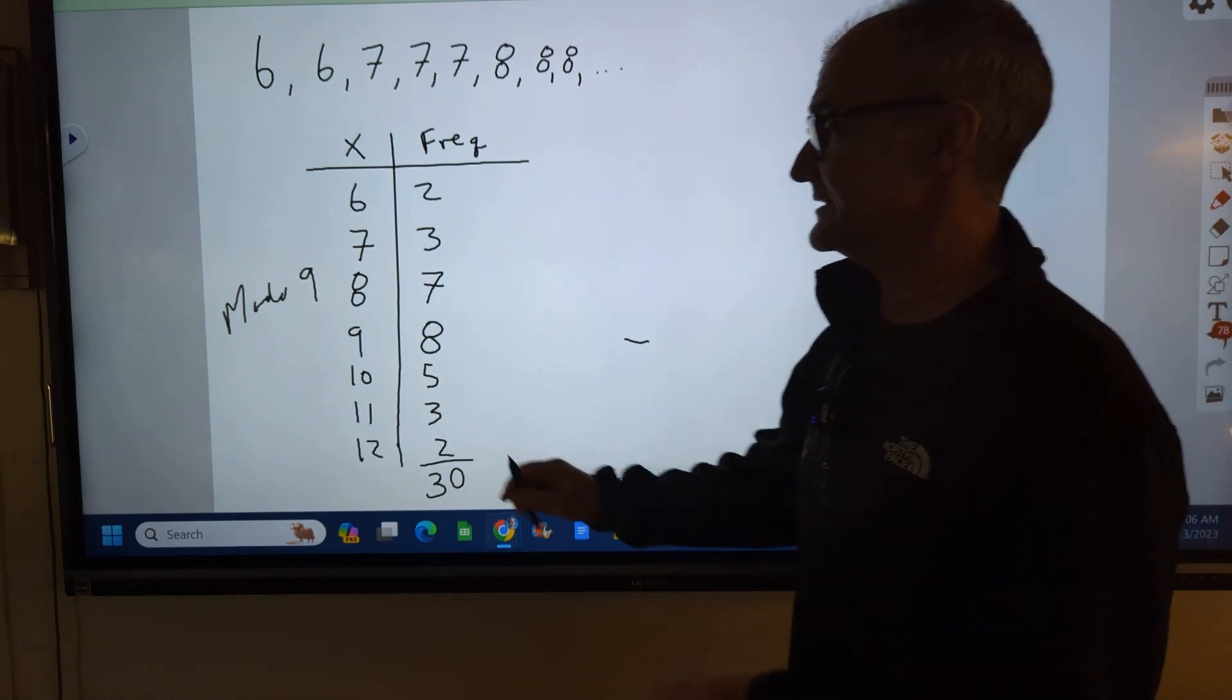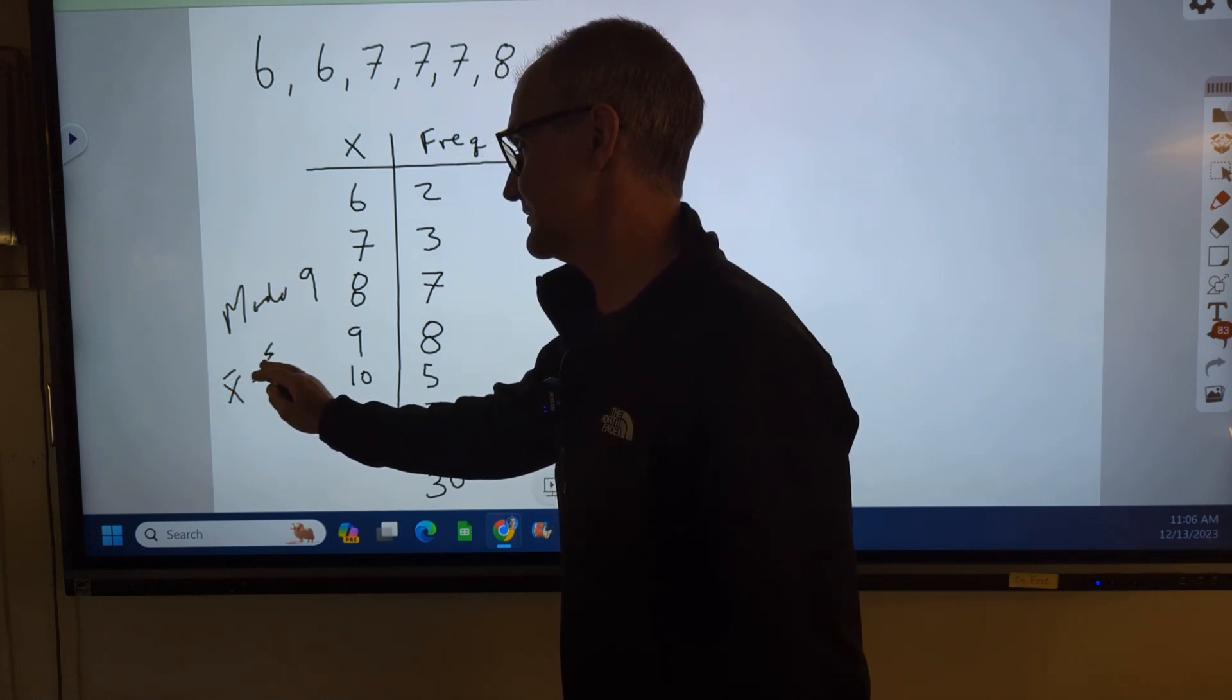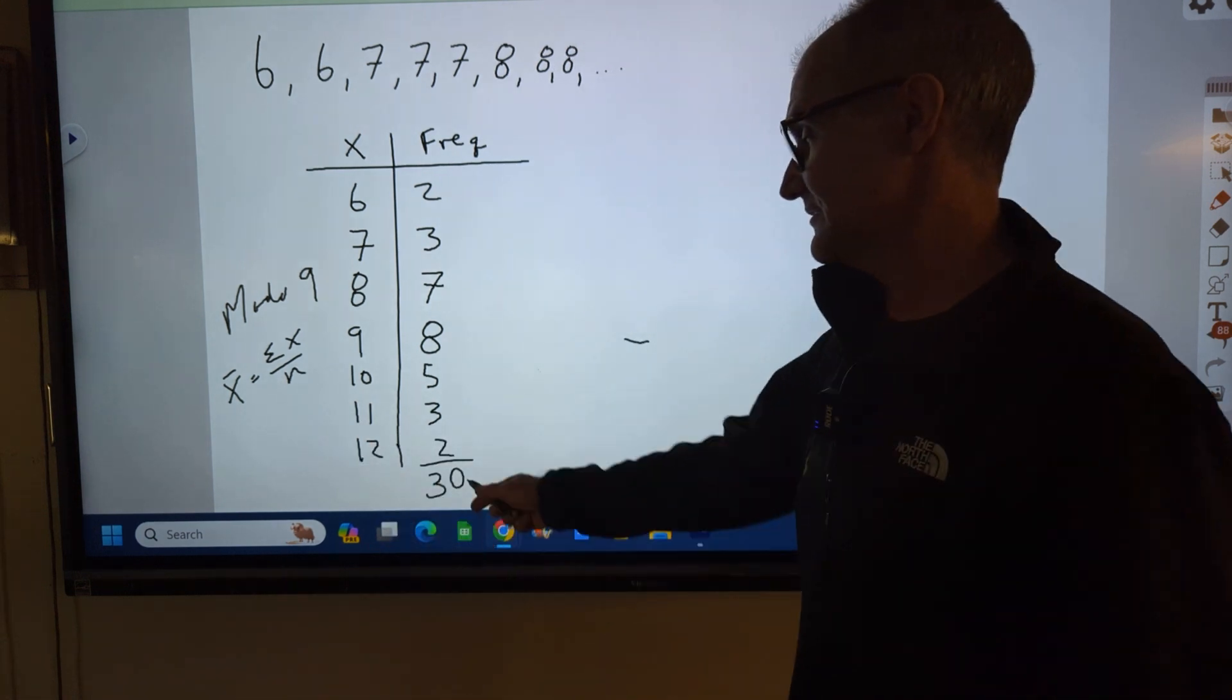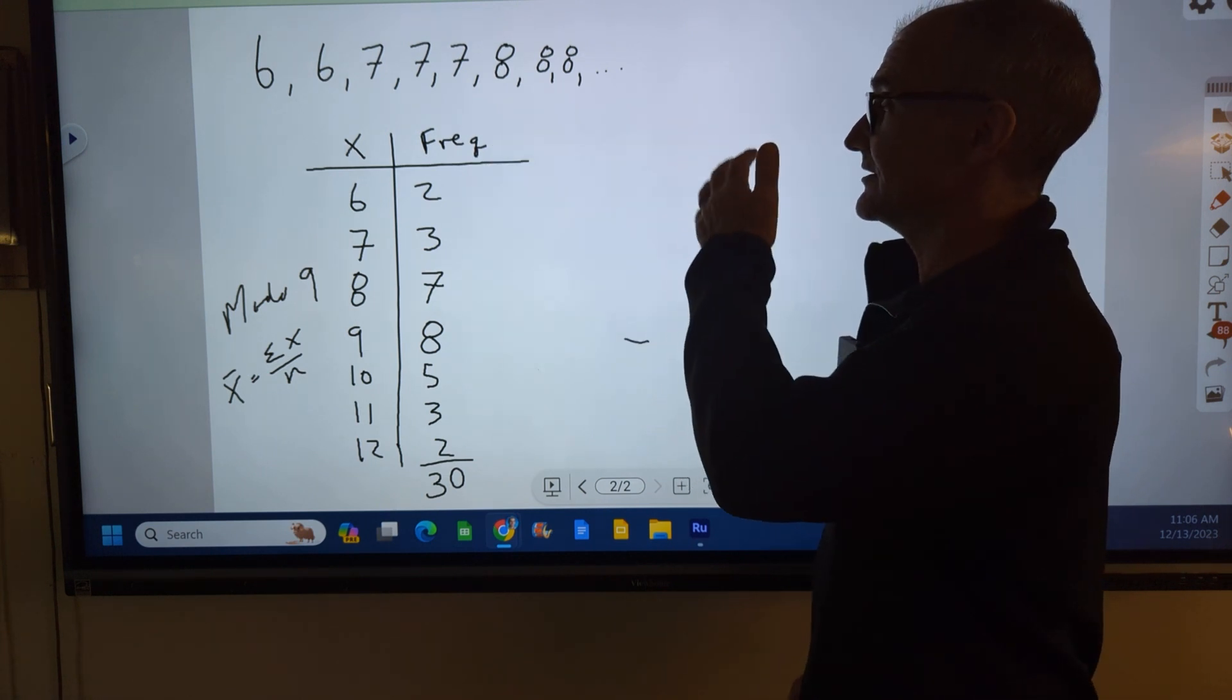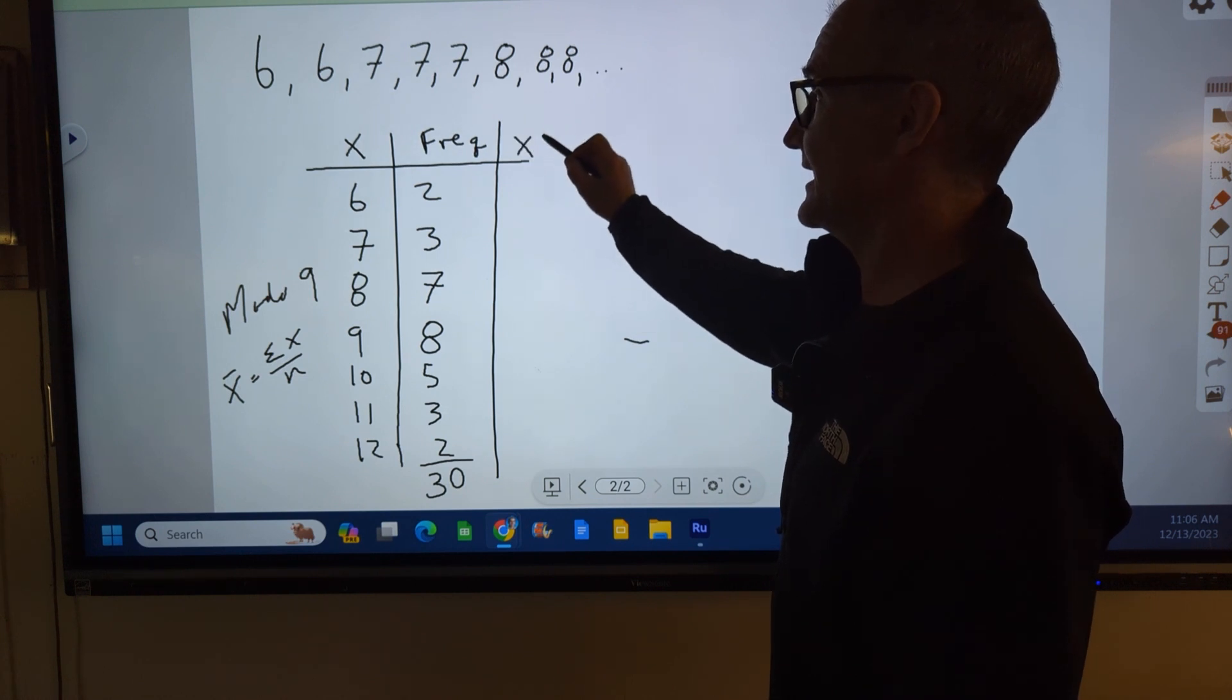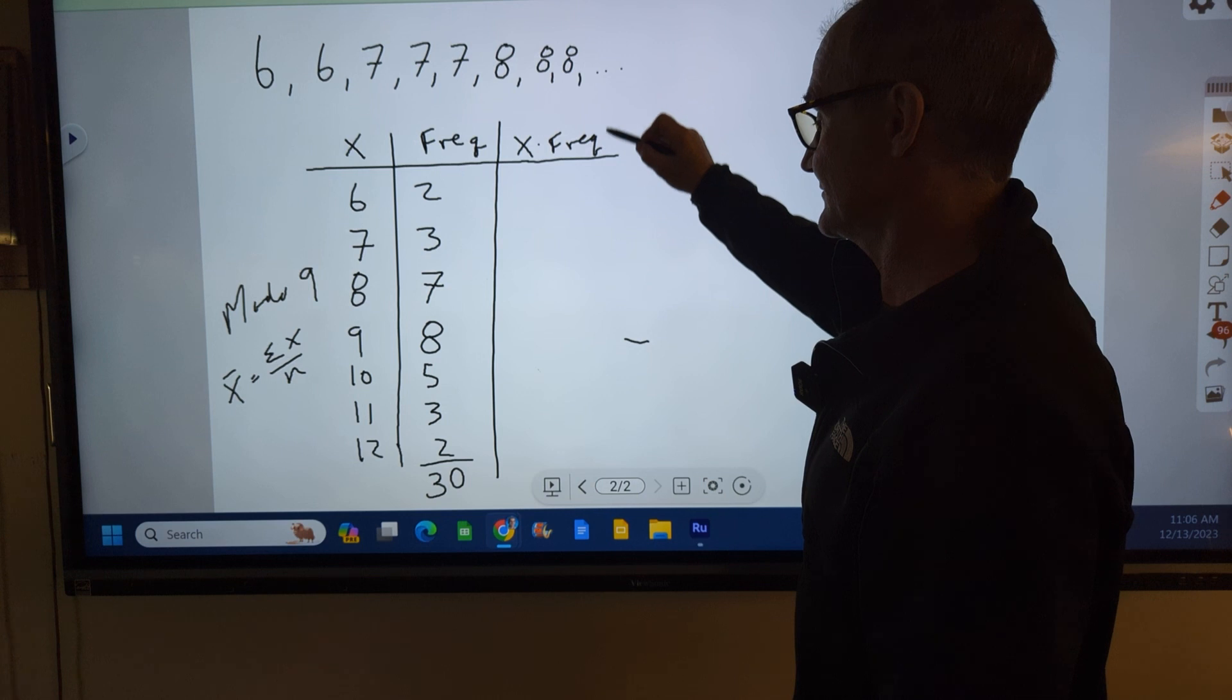To find the mean, the average, remember that average is equal to the sum of all the values, sigma x, divided by the number of values, 30 in this case. So I could go 6 plus 6 plus 7 plus 7, right? I could add all 30 of those values together. Or I could just create a new column, x times the frequency. And then I could add that column up.